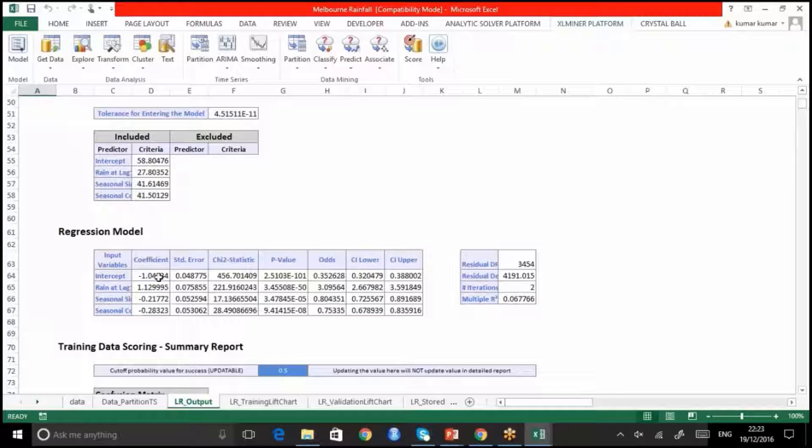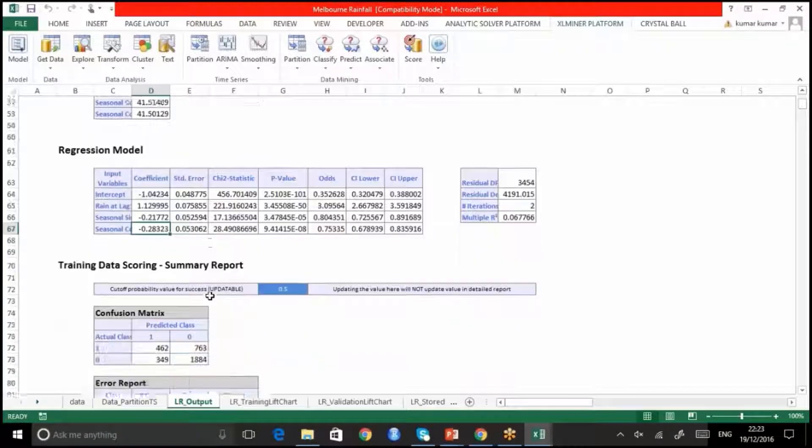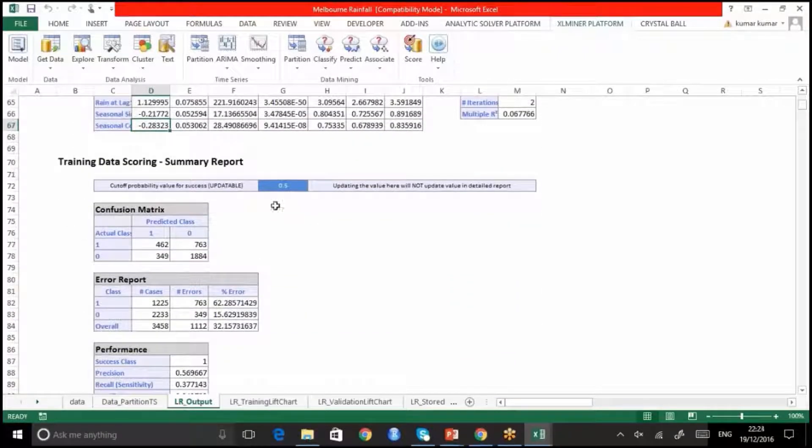Here you have these values, regression model output. You have the β₀ value, β₁, β₂ and β₃ values. And also, you have confusion matrix.